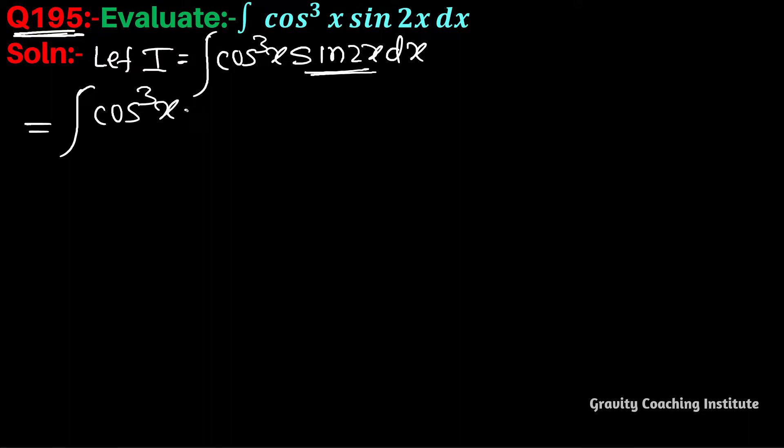The formula sin2x equals 2sinx·cosx. Take the 2 constant outside the integration, then we have cos³x and cosx multiply, which gives cos⁴x into sinx dx. If cosx is differentiated, it will be sinx, so putting...